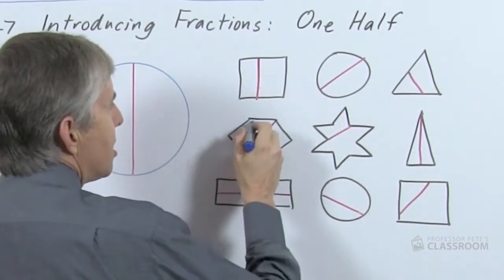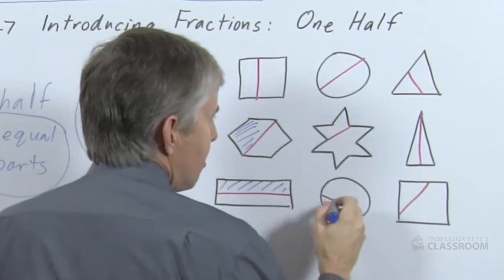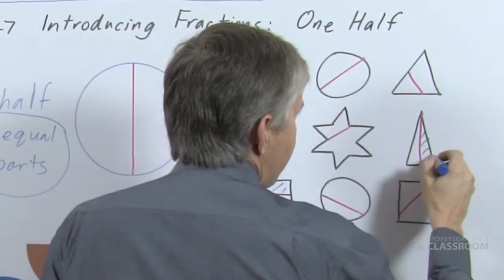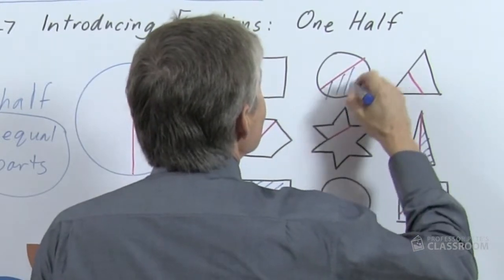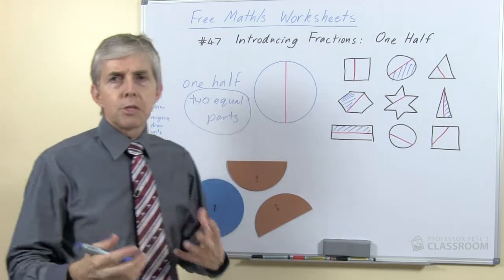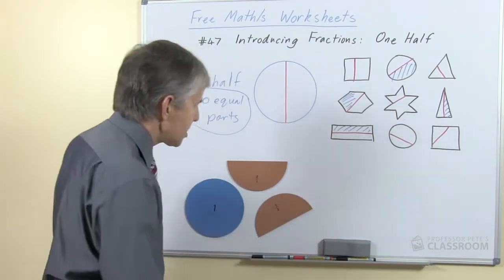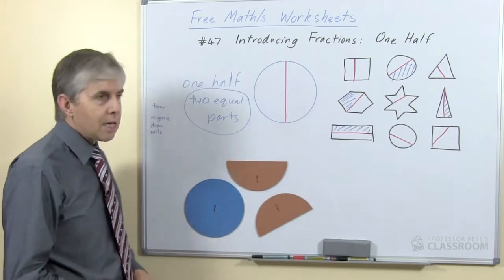This is not equal so we won't shade this, but this one here is. This is. That's not. That's not. That's not. This one is and that one is. That will help the students discriminate between those examples that are halves and those that are not.